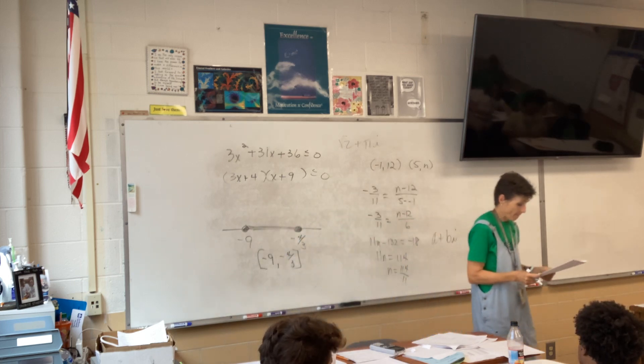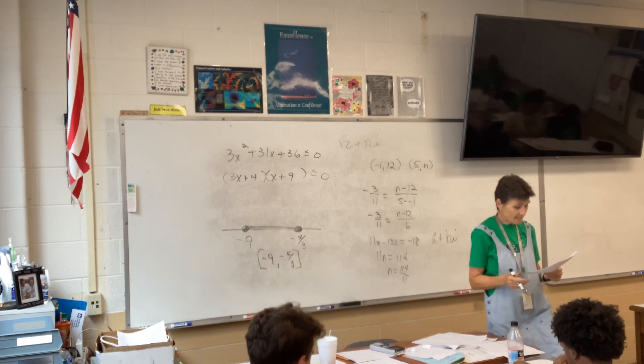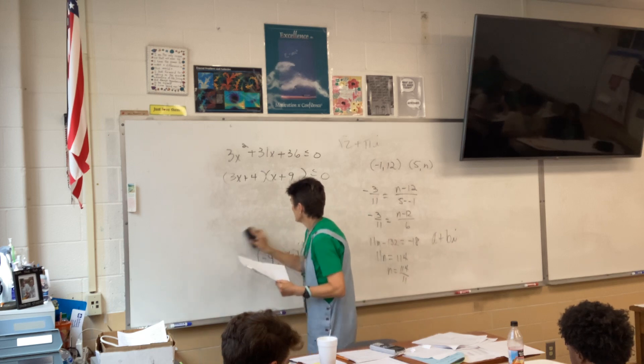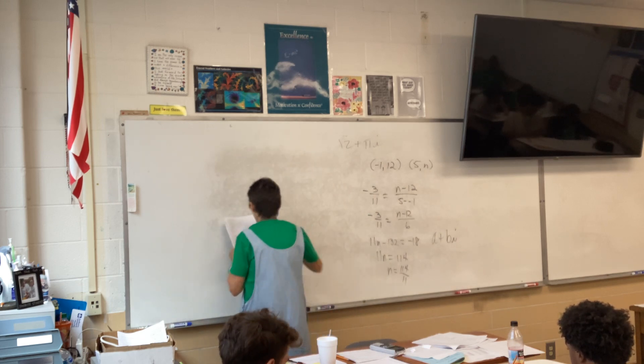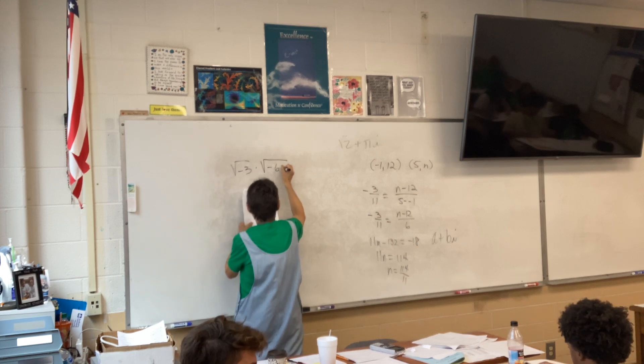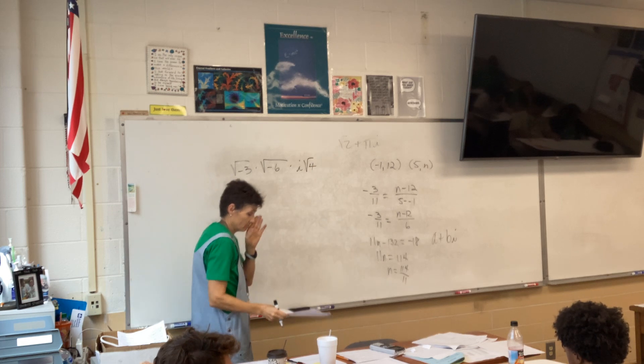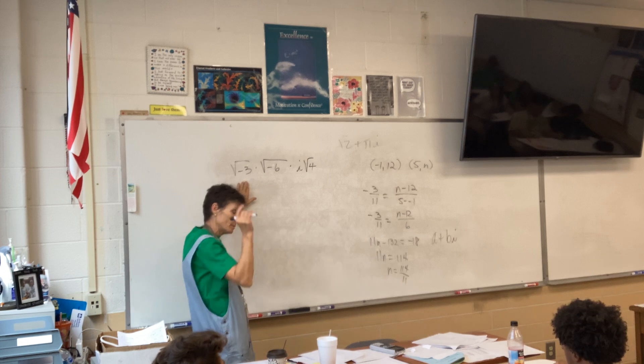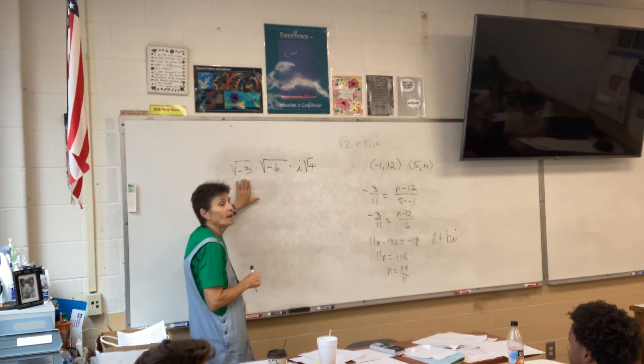So, you could have a number like root 2 plus pi i, that's a complex number because root 2 and pi are both real numbers, right? Yeah. Okay. What else? Could you do 11D?